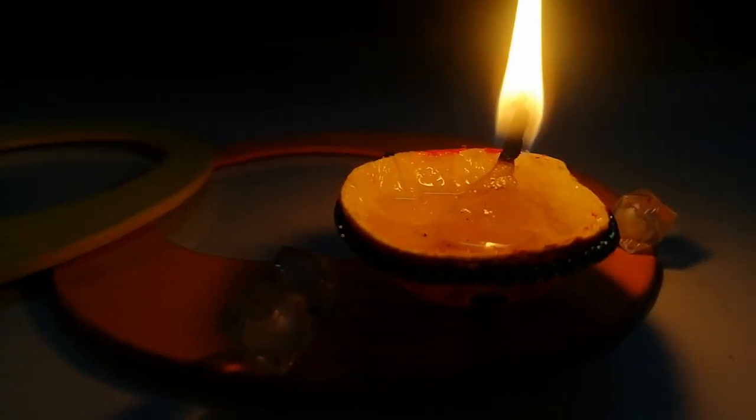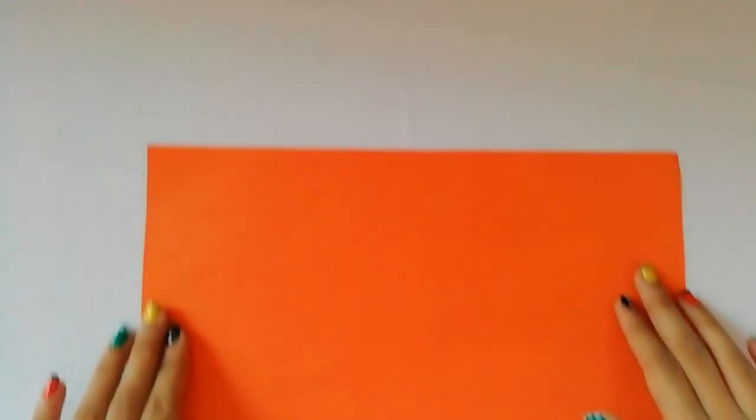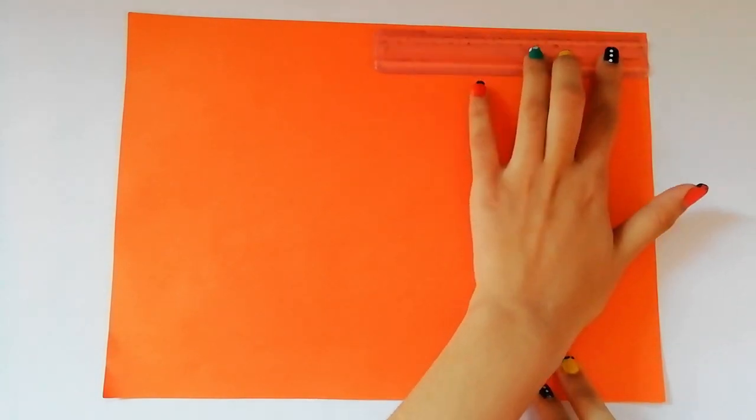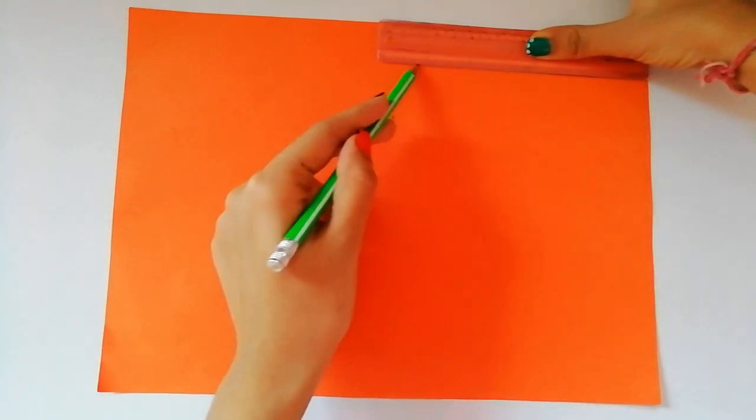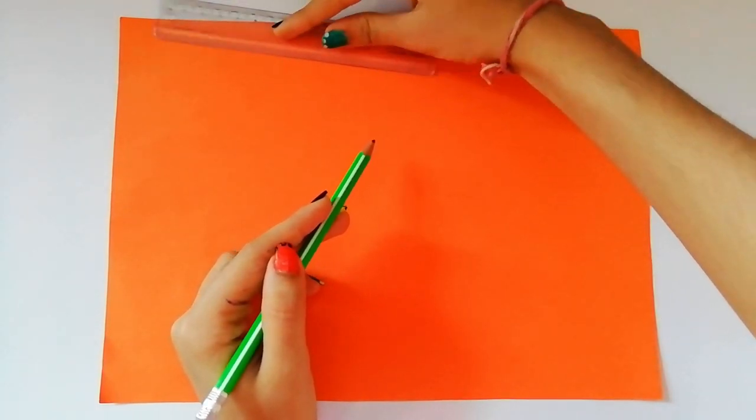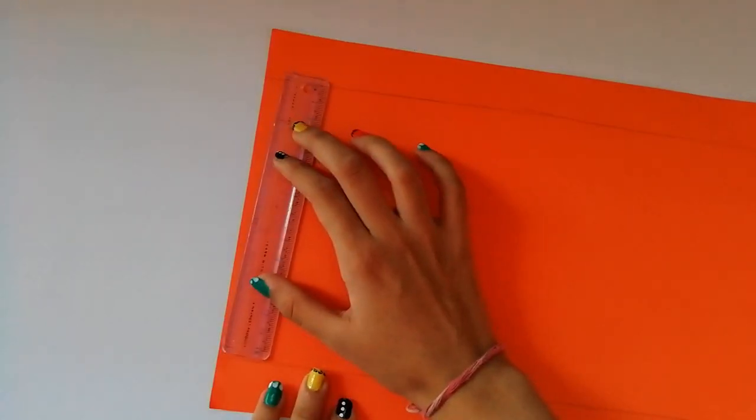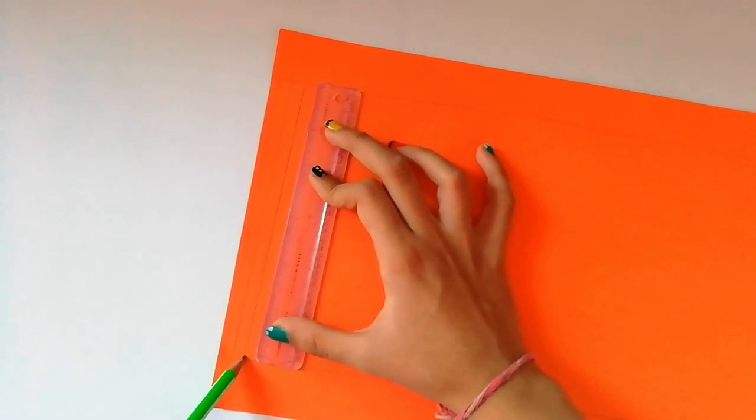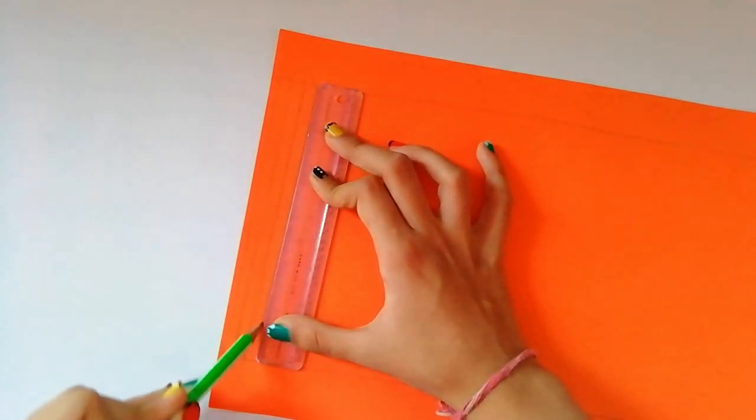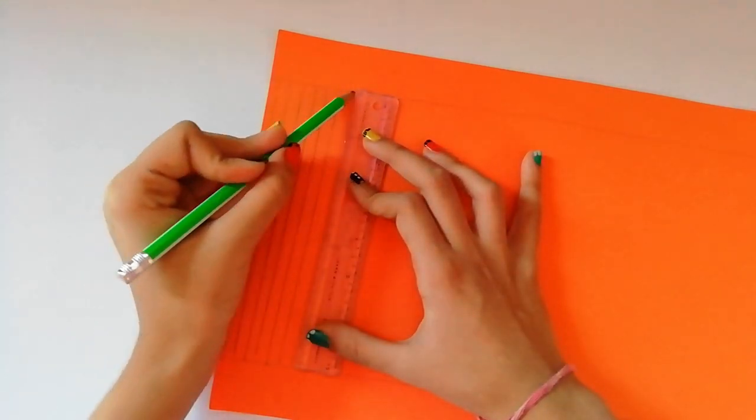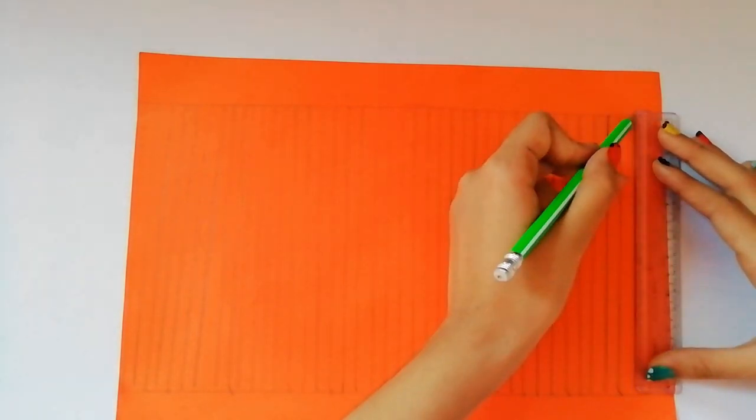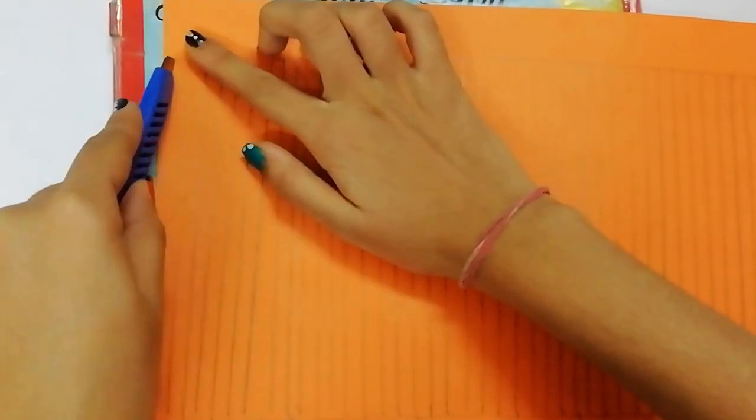Now we can use A4 size paper. Put parallel lines on the paper and start to draw lines from the bottom, but leave space at the top. These lines can be difficult to make, so draw them carefully. After drawing, cut it from the cutter. After cutting, it will look like this.